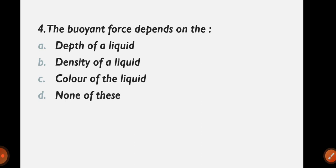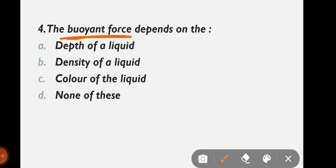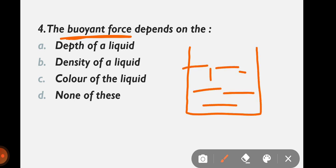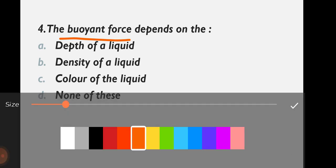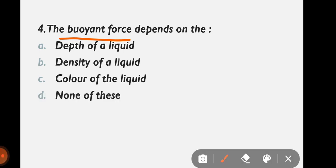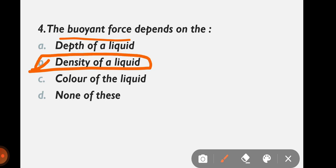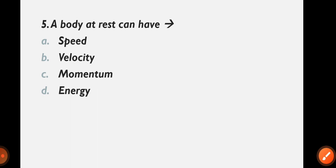Question 4: The buoyant force depends on? For example, if you have a bucket full of water and you put a mug upside down in it, it rises upward — that is because of buoyant force. The options are depth of liquid, density of liquid, color of liquid, or none of these. The correct answer is option B: density of the liquid. Buoyant force depends on density.